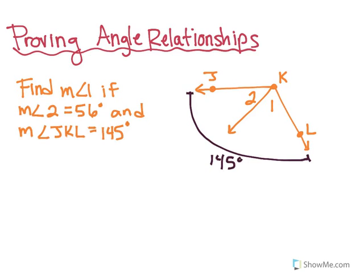We also know that the measure of angle 2 is 56 degrees. So this is what I'm looking for, angle 1, so I'm going to make that my x. Based on our angle addition postulate, I know that the sum of angles 1 and 2 should equal the entire angle, which is 145 degrees. So we're going to make an equation out of that.